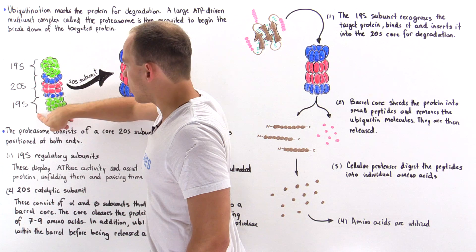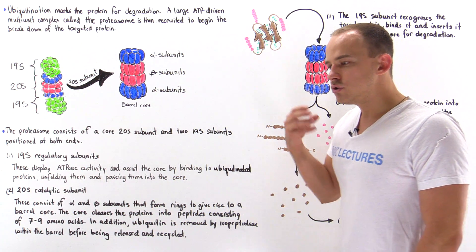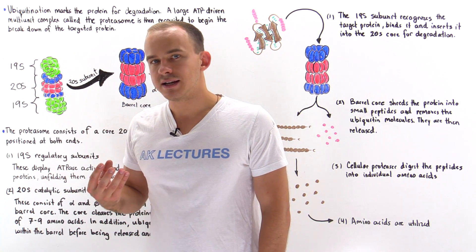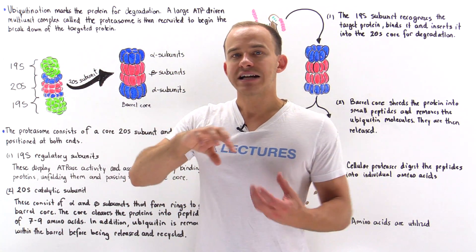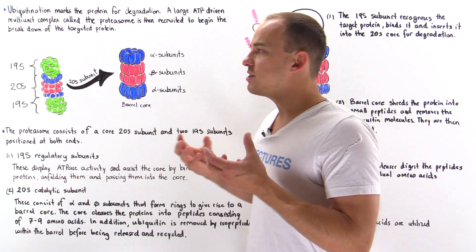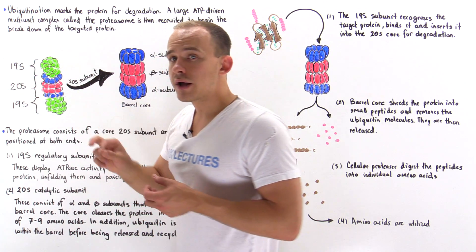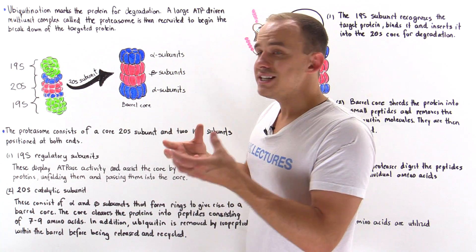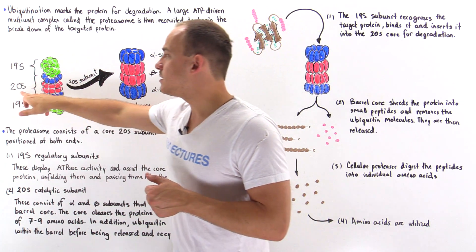What exactly is the function of these two 19S subunits? The 19S subunits essentially locate and bind to the polyubiquitinated protein. Once located, they have ATPase activity that allows them to begin unfolding that protein. We need to unfold the protein because we need to fit it into the 20S core. So it's the 19S regulatory subunit that binds to the polyubiquitinated protein and begins using ATP molecules to unfold and insert that protein into the 20S core.